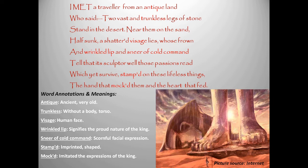The first line reads: 'I met a traveler from an antique land.' The 'I' here is anonymous, but we can assume it is the poet. The traveler is one who visits from place to place. Antique means ancient or very old, so that traveler visited a very old land. The antique land here refers to Egypt. Nowhere else in the poem will we come across the word Egypt — this is the first and last hint that the antique land is Egypt.